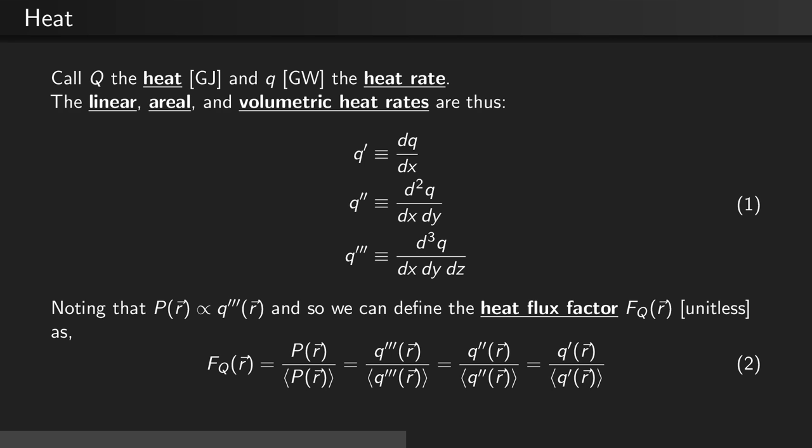Let's also note that the core average power density is proportional to our volumetric heat rate. So we can define what we call a heat flux factor, F sub Q of r, which is a unitless quantity, as the ratio of the volumetric heat rate to the average volumetric heat rate, which if you integrate is equal to the areal heat rate divided by the average areal heat rate, which if you integrate again is equal to the linear heat rate divided by the average linear heat rate.